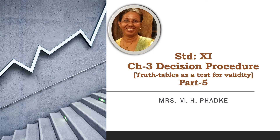Good afternoon. Today we are going to study chapter 3 decision procedure part 5, in which we will continue with the previous exercise. Truth table as a test for validity of arguments. We already know when an argument is valid and when it is invalid. The condition of invalidity is when all the premises are true but the conclusion is false. Let us continue with the exercise.